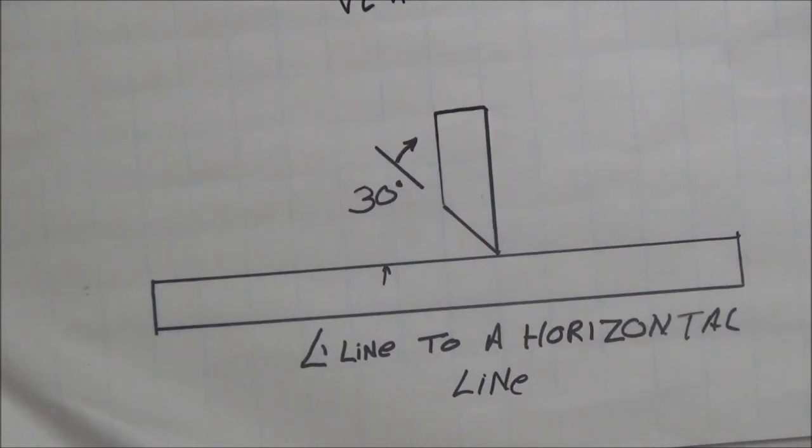Now, let's take a look at the next one here, though. An included angle. Alright? An angular line to another angular line. Let's take a look and see what that's all about.